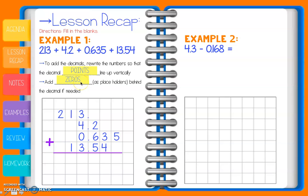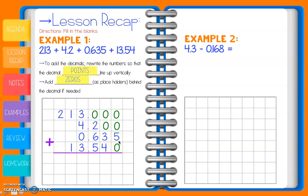Now before we add, we're going to add in our zeros as placeholders. Behind my 213 I need three zeros as placeholders to help us when we add straight down the column. Behind my 4.2 I need two placeholder zeros. My 0.635 is my longest number so I don't need any placeholders there. Behind my 13.54 I have one empty space, so I put in a zero as a placeholder.